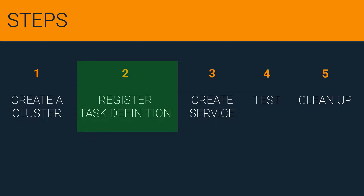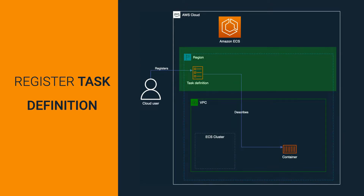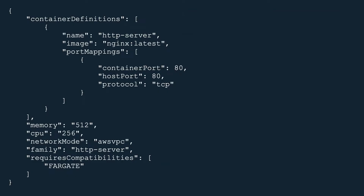Second step: Register task definition. A task definition is a JSON file that describes the configuration for your Docker container. As with the ECS cluster, a task definition is a regional resource. You can download the task definition for this video from our GitHub repository — check out the link in the video description. Our task definition sets the image we're going to use for our container, the port mapping, and computational resources.